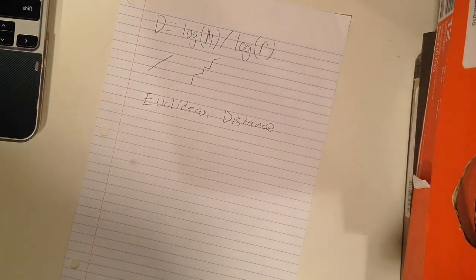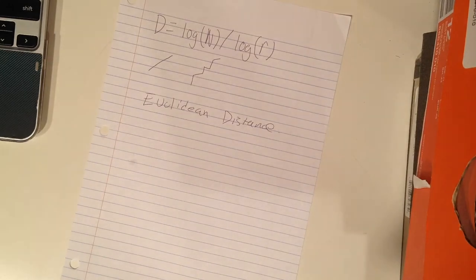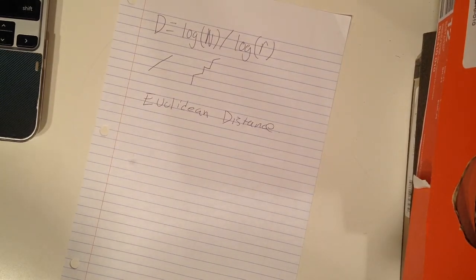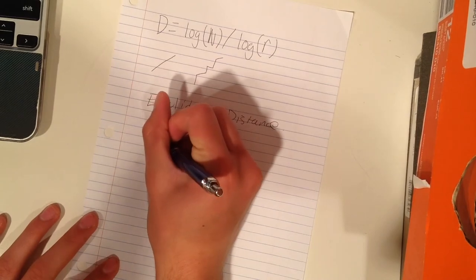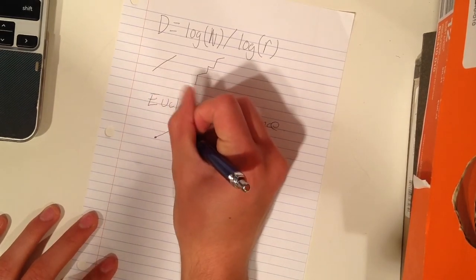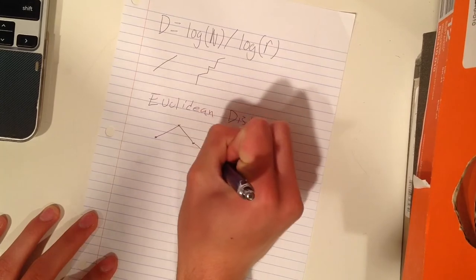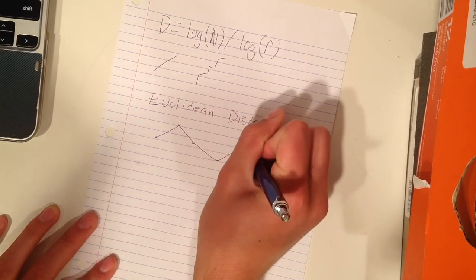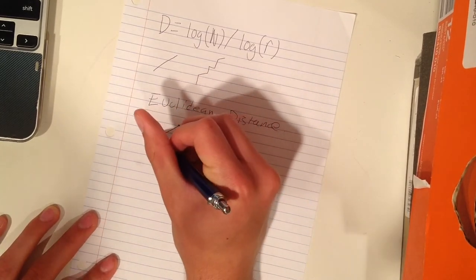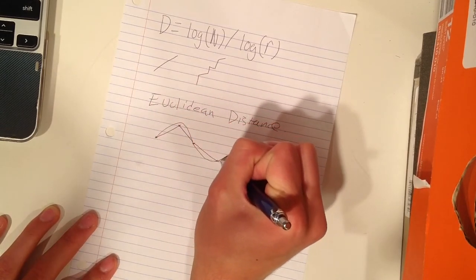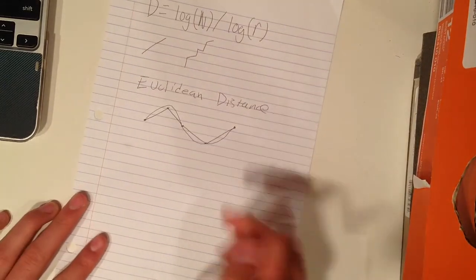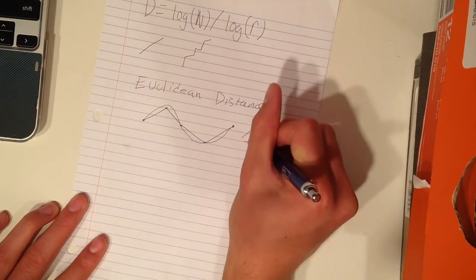Euclidean distance is a straight line — it represents the shortest distance between two points. Something that, the way they draw it out is: we've got a little line here, and this represents the other line. Don't get confused with the other line because it's still just one line.